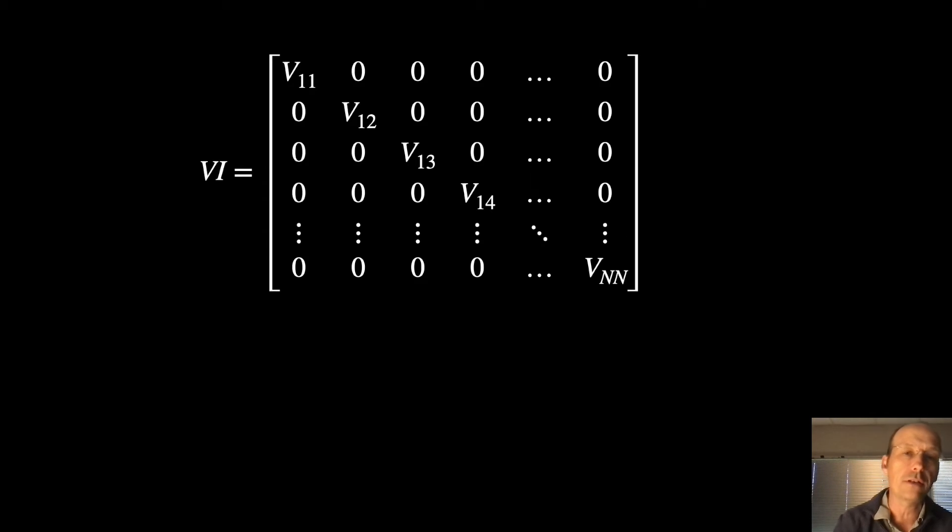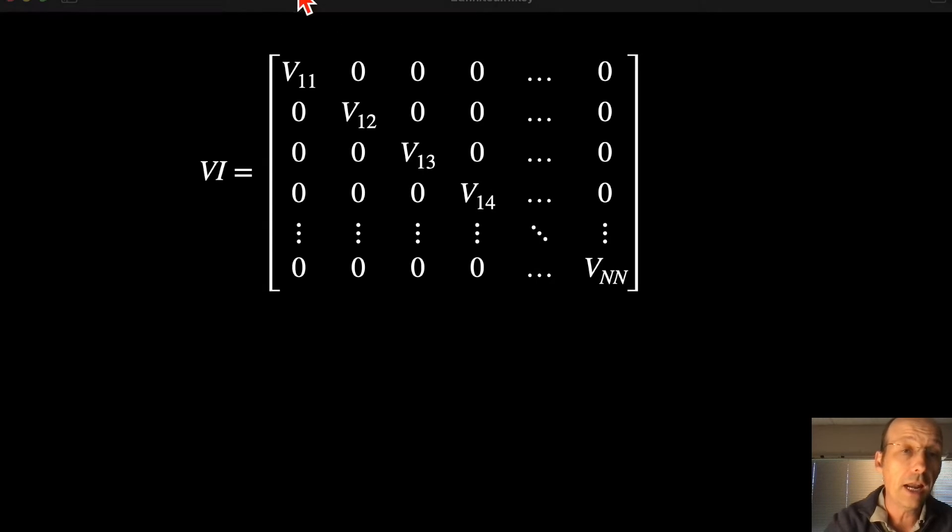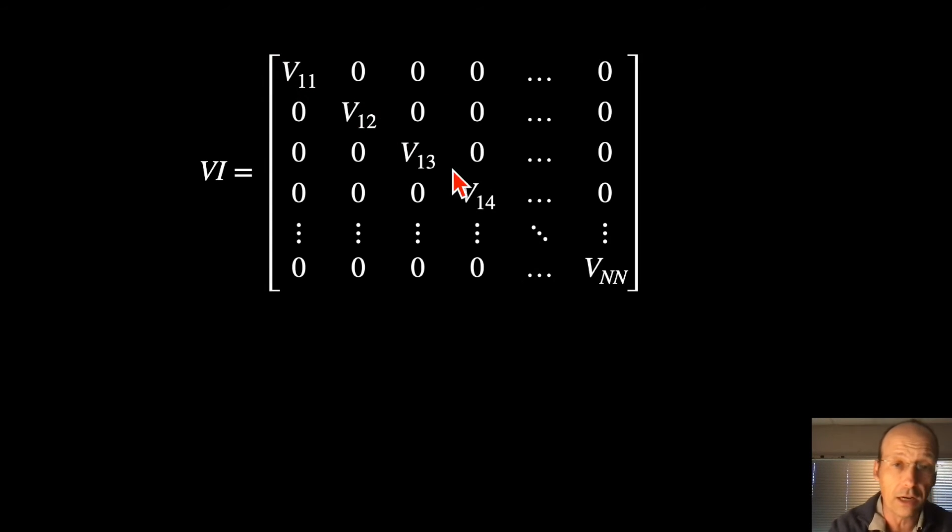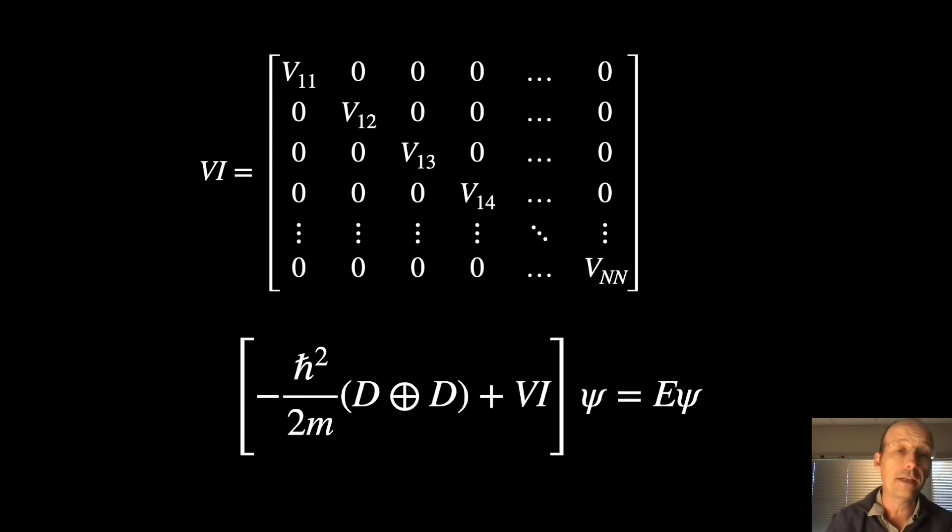And then we also need to represent our potential. Our potential, we have our potential energy at different points. V1,1, 1,2, and so forth. And I'm again going to stretch it out as a one dimensional thing along the diagonal. And if you put all that together, we get this.